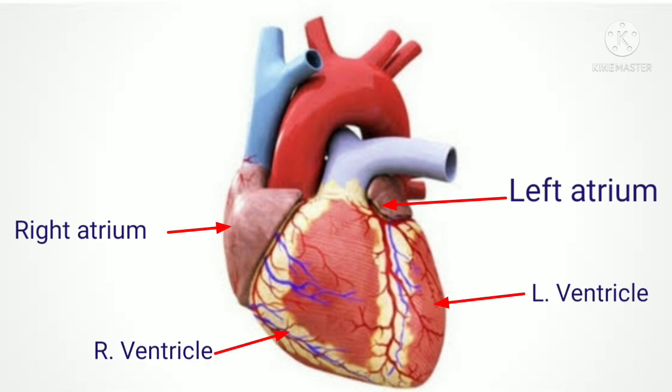The left parts are called the left atrium and left ventricle. The right parts are called the right atrium and right ventricle.